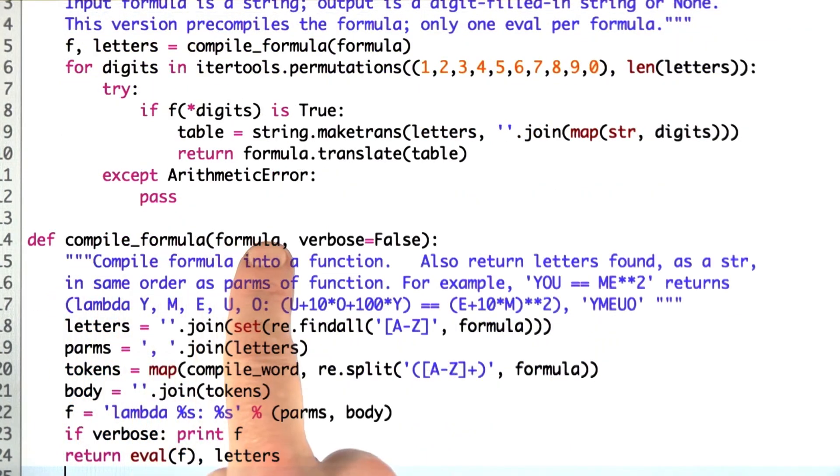The function compile_formula takes a formula as input. First, I figure out all the letters. That's going to be the y, m, e, u, and o.